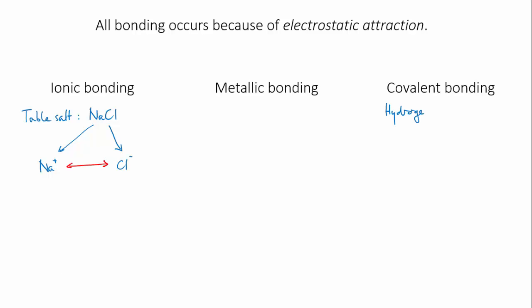There's covalent bonding, in which two atoms share electrons, and the attraction is between the nuclei of the atoms and the shared electrons. This is the bonding that holds two hydrogen atoms together to form a hydrogen molecule.